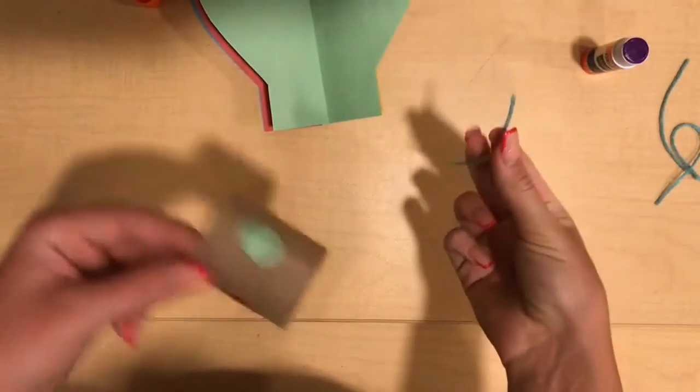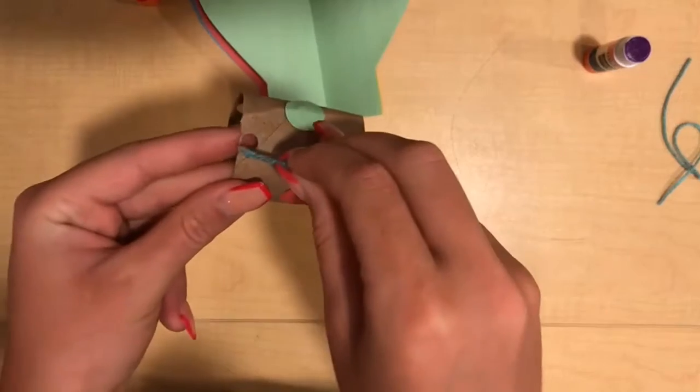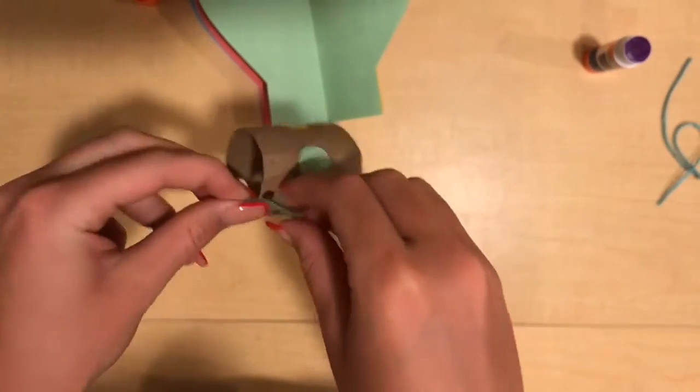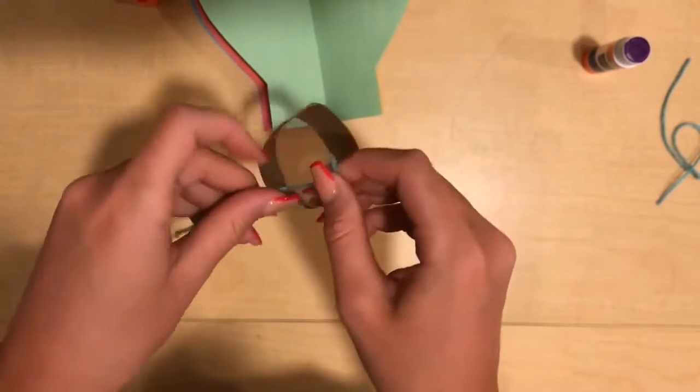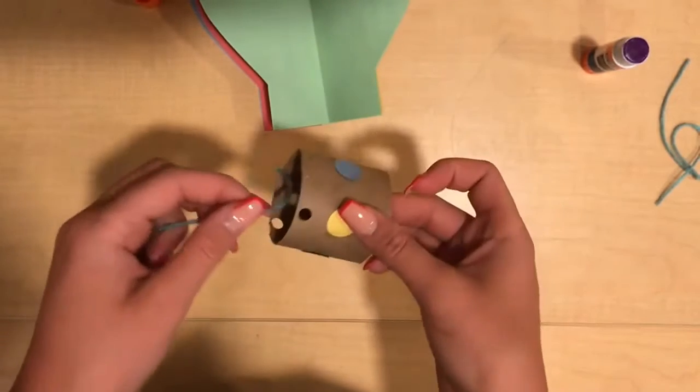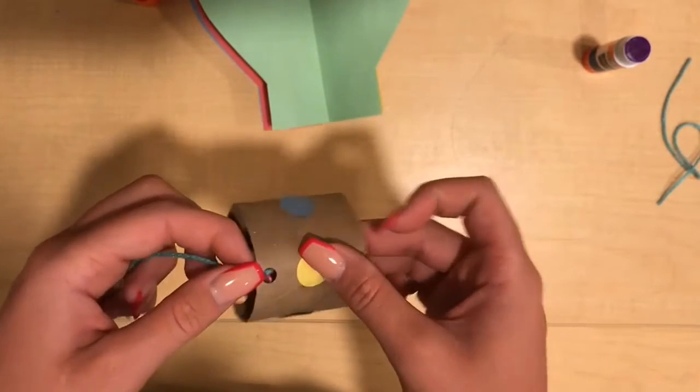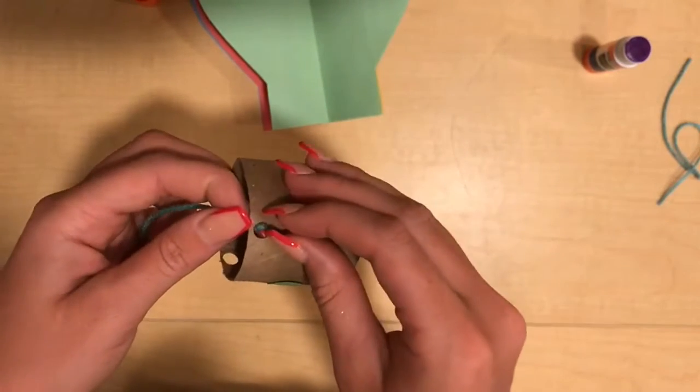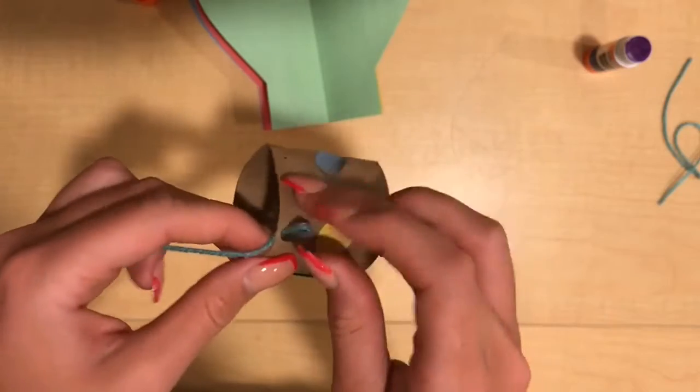The next material we will be using are individual pieces of yarn. You can take the piece of yarn and put it through the little hole that has been pre-cut onto the toilet paper roll. Don't worry, it may take a few times, but after you get it through the hole, you can go ahead and tie a little knot.